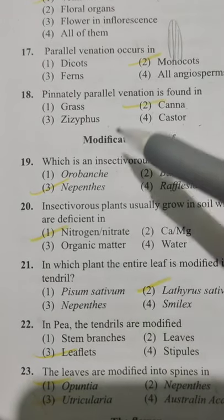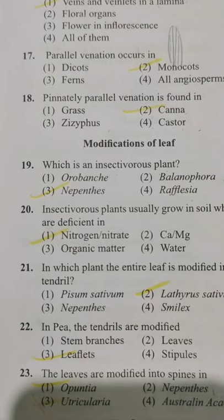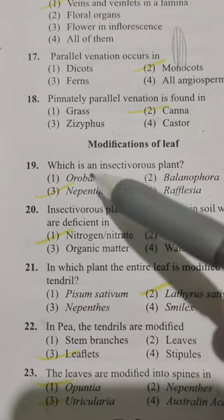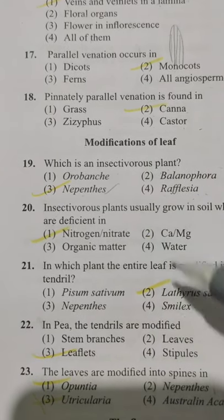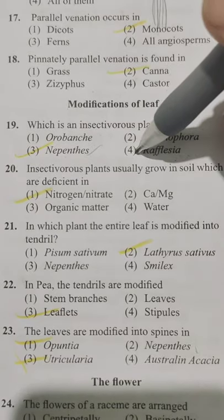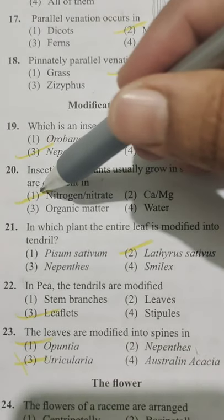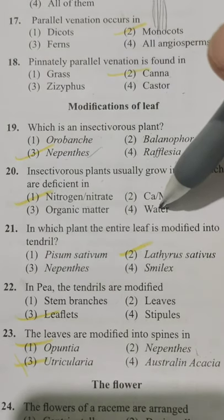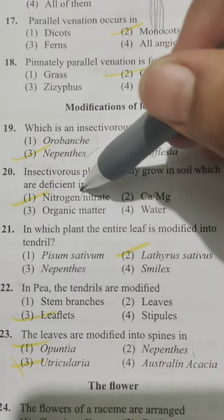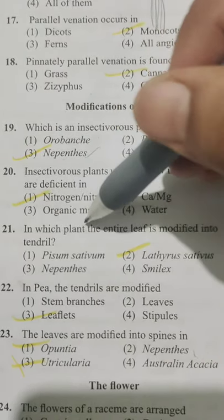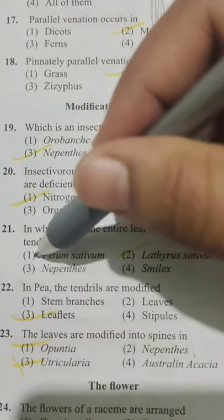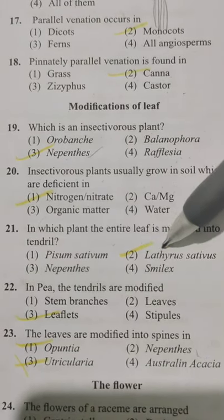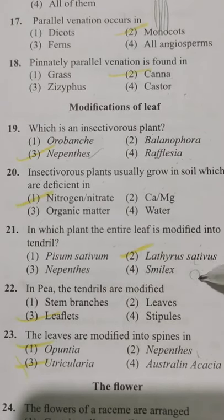Which is an insectivorous plant? Option 1 Orobanche, Option 2 Balanophora, Option 3 Nepenthes, Option 4 Rafflesia. The answer is Option 3, Nepenthes. Insectivorous plants usually grow in soil deficient in — Option 1 nitrogen/nitrate, Option 2 calcium/magnesium, Option 3 organic matter, Option 4 water. They grow in nitrogen-deficient soil — Option 1. In which plant is the entire leaf modified into a tendril? In Lathyrus sativus — Option 2 — the entire leaf is modified into a tendril.